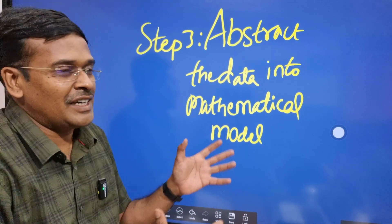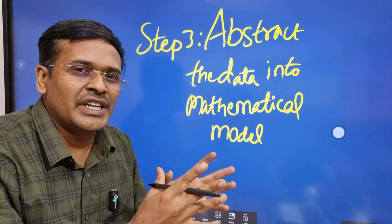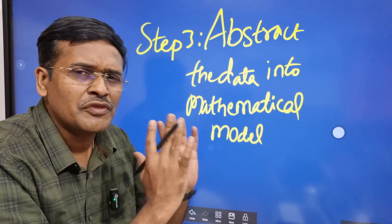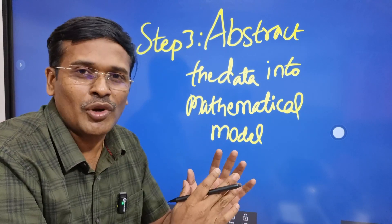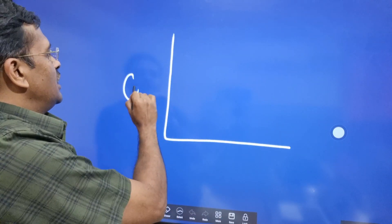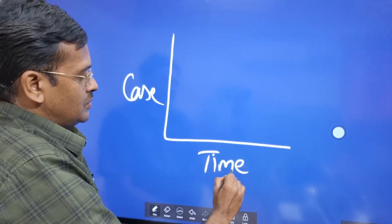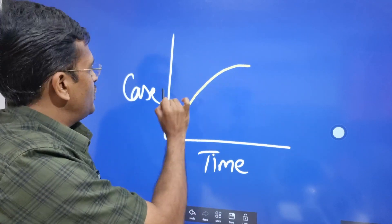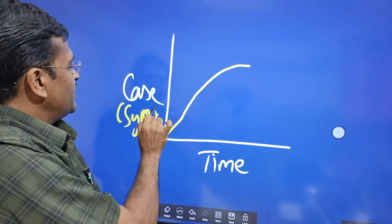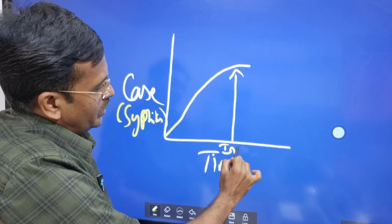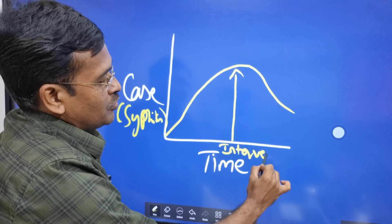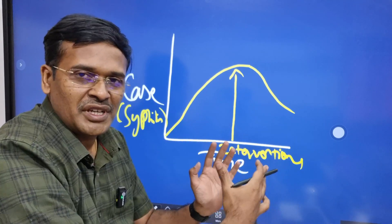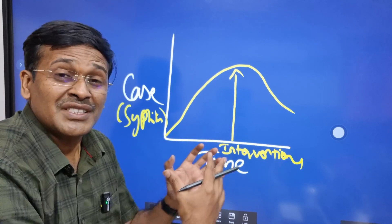Step three is getting the data — abstracting the data into the mathematical model. Abstract all those data: who are the susceptibles, late and early latent, how many are there? That data should be abstracted and put into the mathematical model. Especially for infectious diseases, the model we follow is the transmission dynamics model. It is very simple: on the left side we have the cases and here the time. We are modeling different interventions for syphilis, showing how the increasing trend decreases over a period of time with different types of interventions. This is a linear model — called the transmission dynamics model. By treating the infected population, we are trying to reduce the susceptible population.